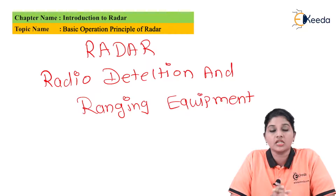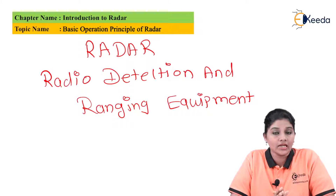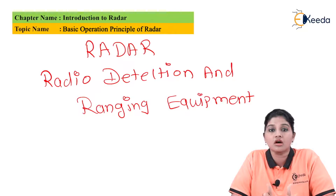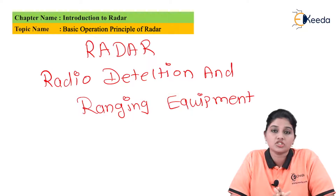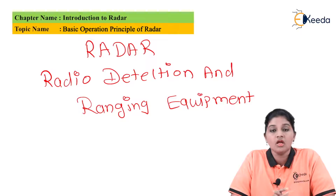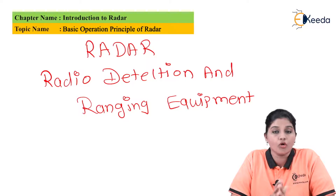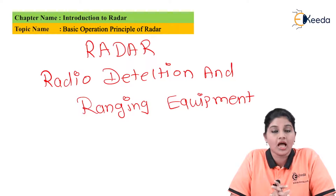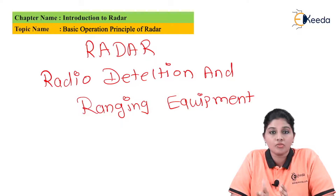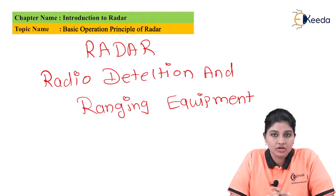The second disadvantage is that initially the radar system was not able to detect colors — it was essentially color blind. But nowadays, by using various adaptive signal processing techniques, color detection can also be implemented. The third disadvantage is that the transmitted signal cannot penetrate deep into water bodies or through thick metal sheets, which puts restrictions on radar applications in underwater conditions.